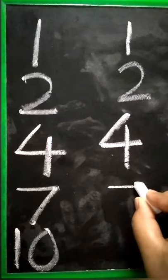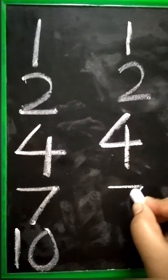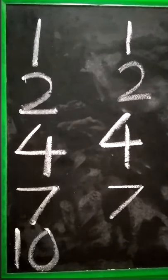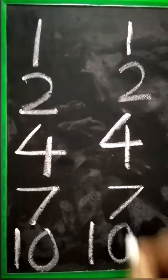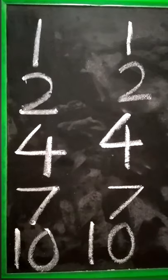Sleeping line, slanting line backward number 7. Then 1, 0, number 10.